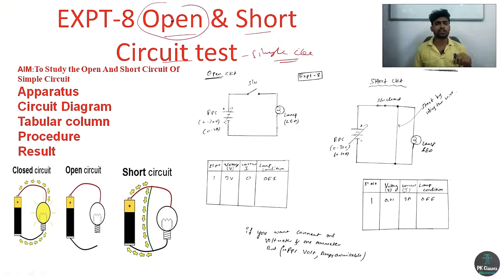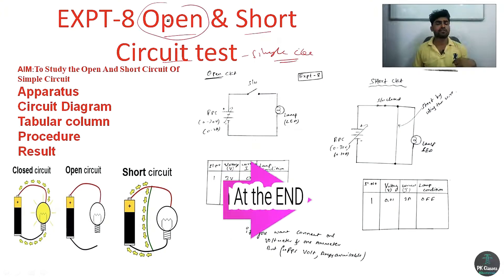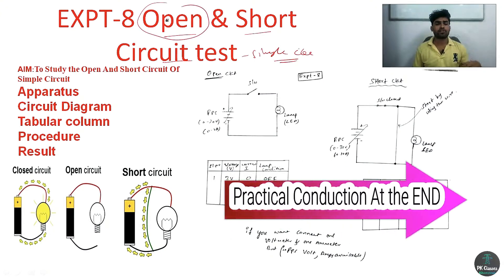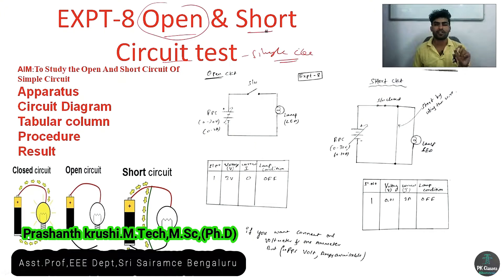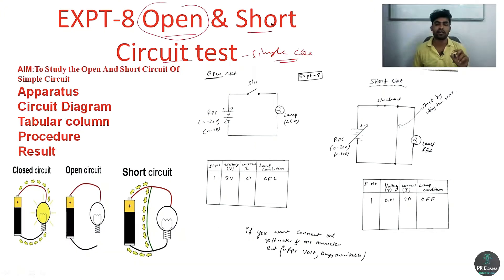For open circuit, assume there is a switch and a lamp, with a wire in between. If you cut that wire, the lamp will not glow — that is an open circuit. For short circuit, if the phase and neutral wires touch each other across the lamp, the lamp will burn out. Similarly, if you make mistakes during an experiment, equipment will be damaged — that is a short circuit.